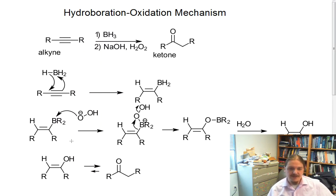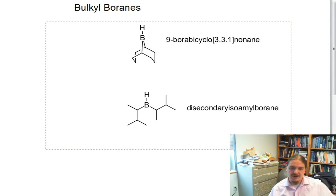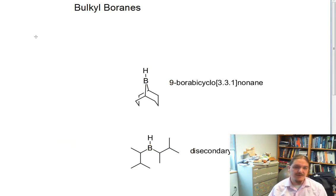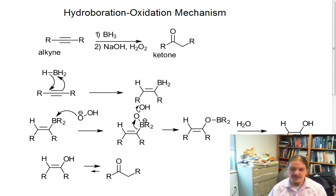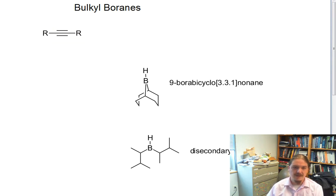It's actually similar to what alkenes do, except we have an alkyne. There's one little trick to the alkyne version, and that is because borine is really small and alkynes are really linear. Alkynes can react with borine more than once.